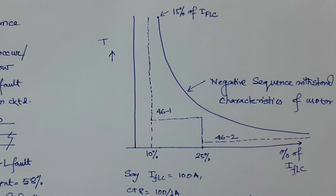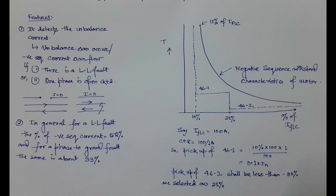Here I have drawn a typical negative sequence withstand characteristics curve for a motor. The graph starts from 15% of full load current, meaning below 15% the motor can continuously withstand negative sequence current. The negative sequence component follows an inverse time characteristic, so you must set the relay to trip before the motor exceeds its safe withstand zone.